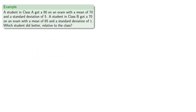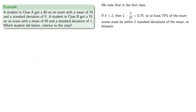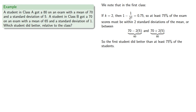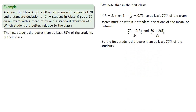If k equals 2, then 1 minus 1 over 2 squared equals 0.75, so at least 75% of the exam scores must be within two standard deviations of the mean — or between 70 minus 2 times 5 and 70 plus 2 times 5 — that's 60 and 80. This means that the first student who got an 80, which is right at the top of the range, did better than at least 75% of the students.